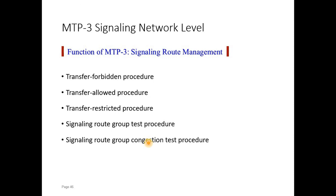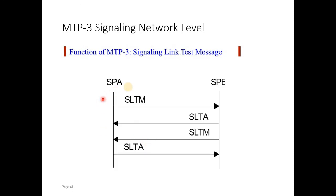To make this more interactive, here is an example of how a signaling test procedure works. In this case, signaling point A (SPA) sends a signaling link test message to signaling point B (SPB), and SPB responds back with a signaling link test acknowledge message. This way the two entities can test the signaling links between each other and can begin message exchange.